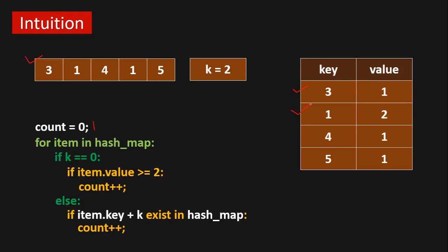For the next iteration with key=1: k equals two, so we check if one plus two equals three exists in the hash map — yes, so count becomes two. Next, key=4: four plus two equals six, which does not exist in the hash table, so we don't increase count. Next, key=5: five plus two equals seven, which does not exist, so count stays at two. At the end, we get count equals two, which is our answer.